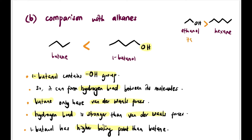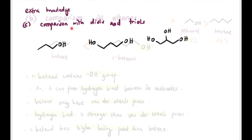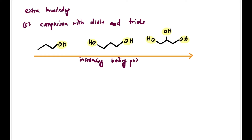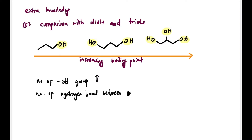Extra knowledge: comparing diols and triols with regular alcohols, the difference is the number of OH groups. Boiling point increases with more OH groups because more hydrogen bonds can be formed between molecules. More hydrogen bonds means stronger IMF, hence higher boiling point.